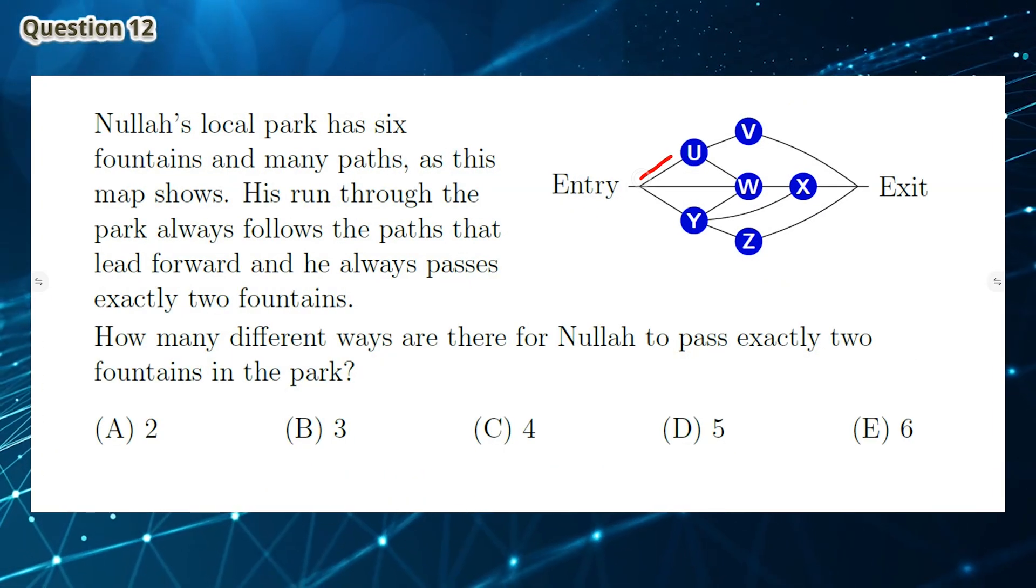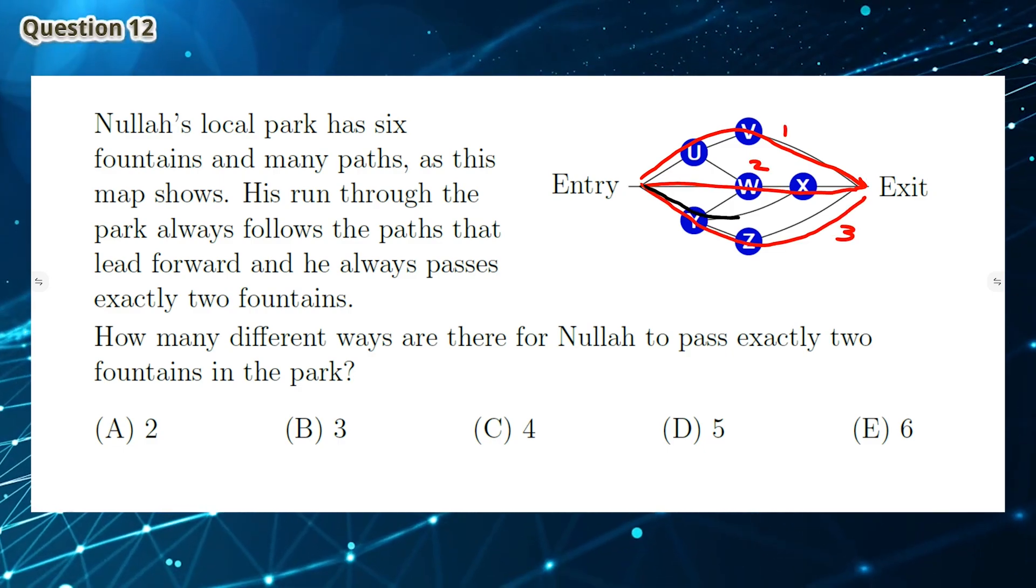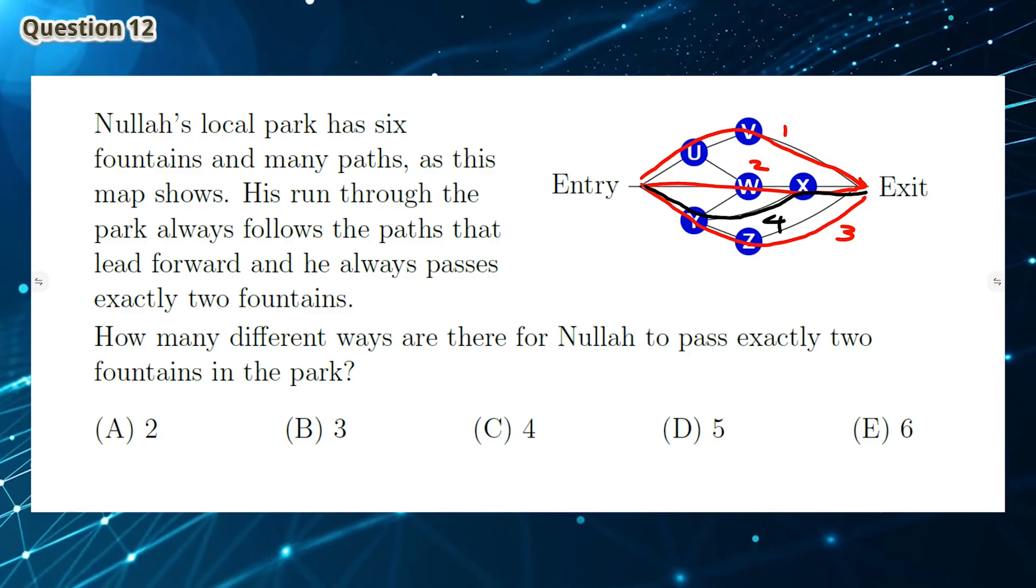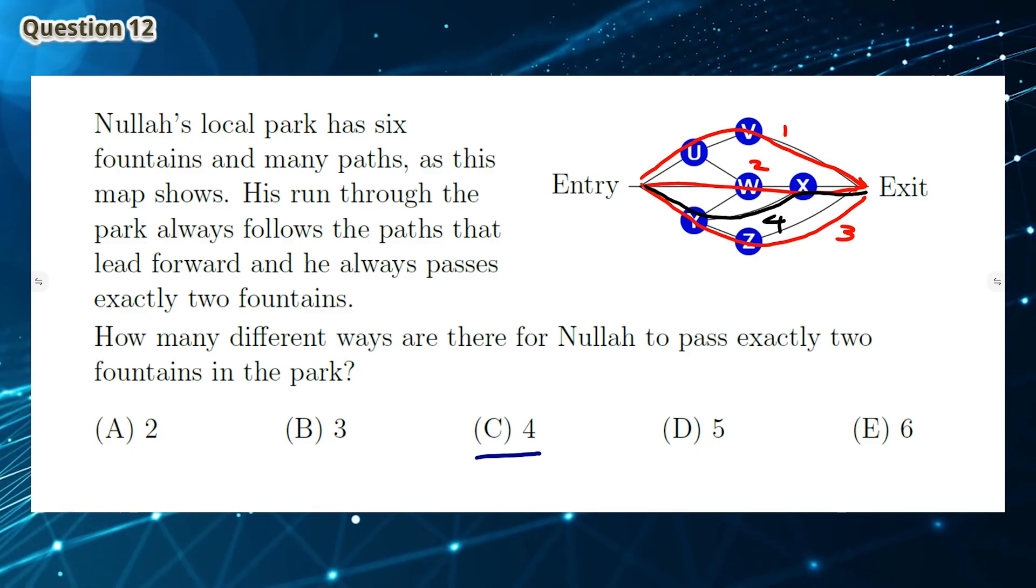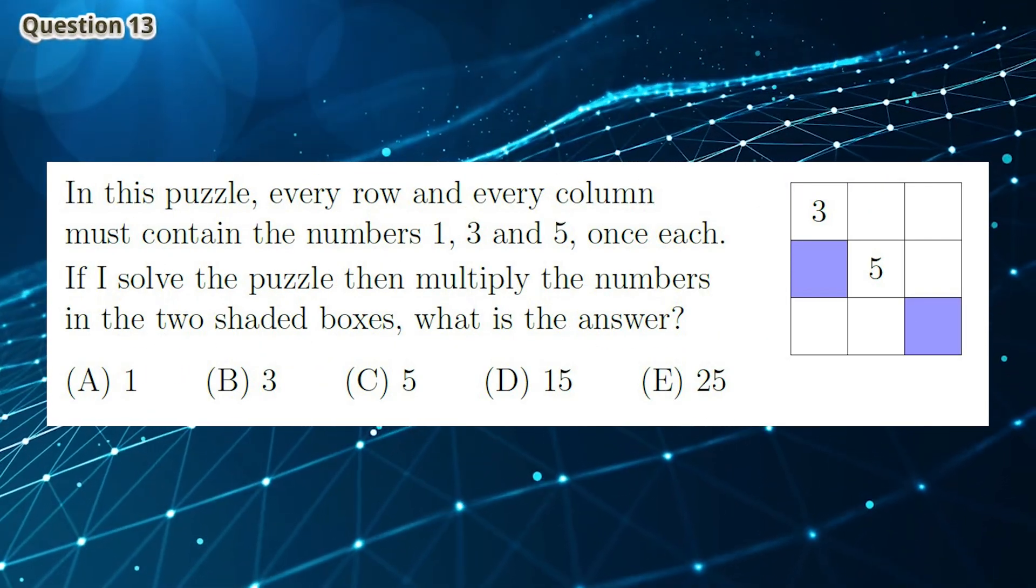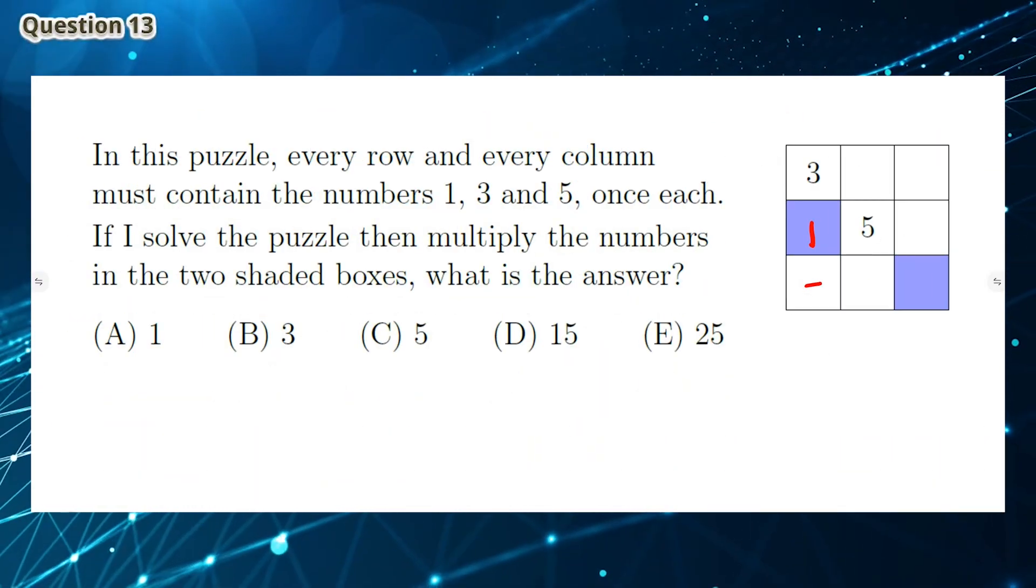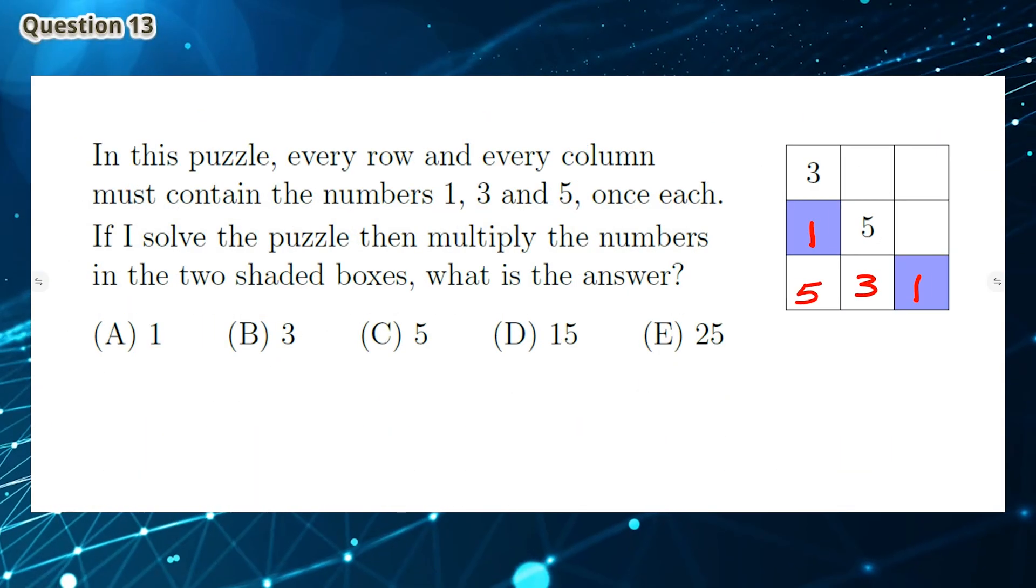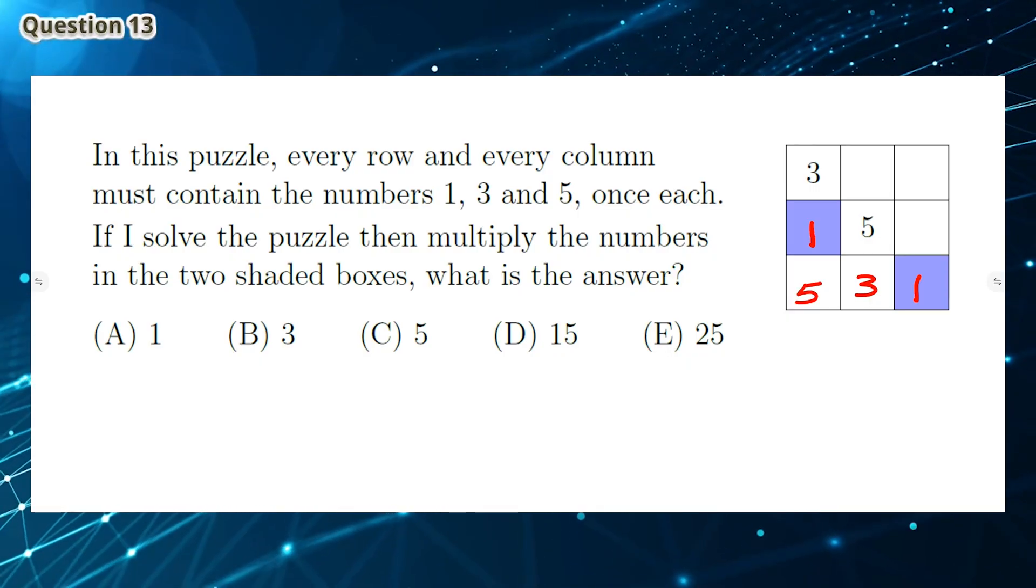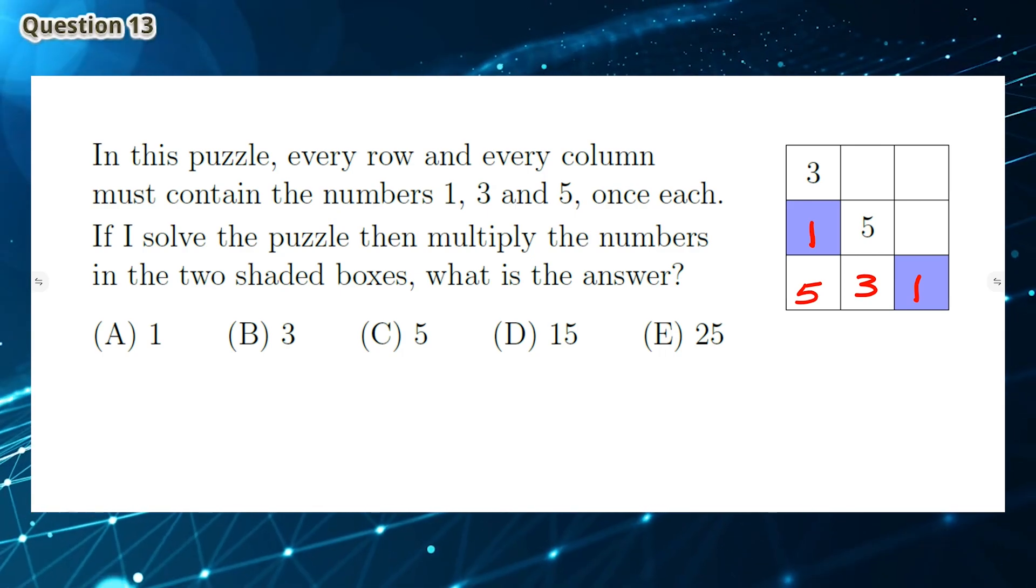Question 12: We can draw each path as shown. As you can see, there are only 4 different ways for Nala to pass exactly 2 fountains in the park, so the answer is C. Question 13: We can complete the puzzle as shown. The blue square on the left is filled with the number 1. If we multiply 1 by 1, we still get 1, so the answer is A.